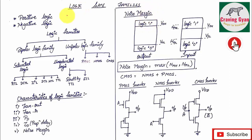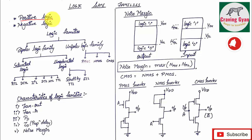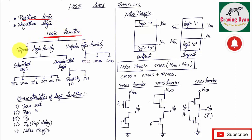In the case of positive logic, binary has two sets of outputs — one is high and the second one is low. High represented as 1 and low represented as 0 is positive logic. Whereas in the case of negative logic, high means 0 and low means 1.